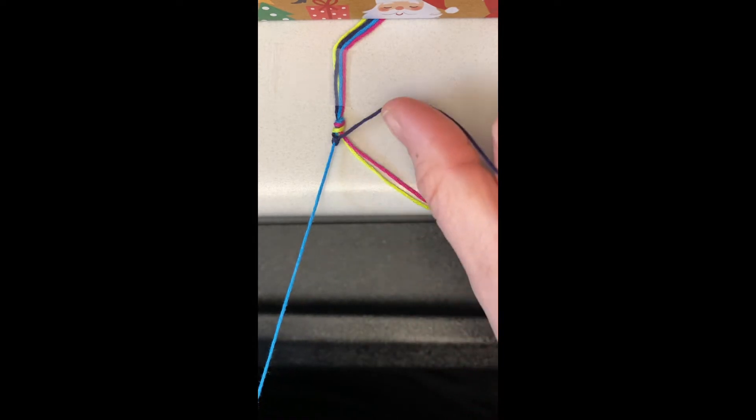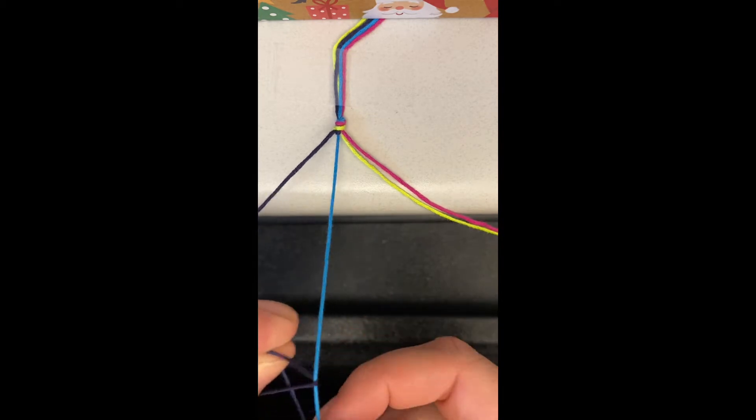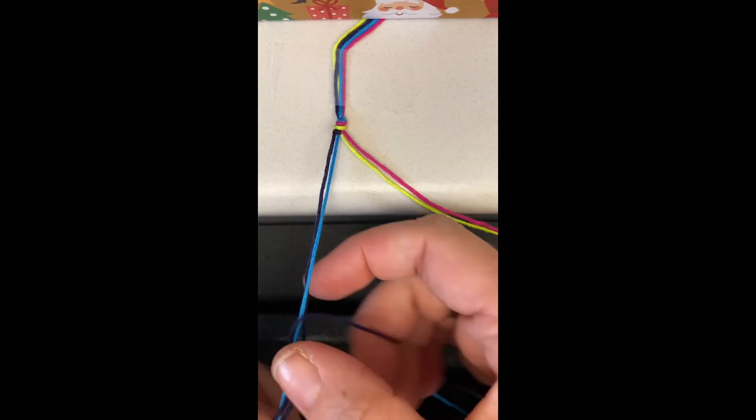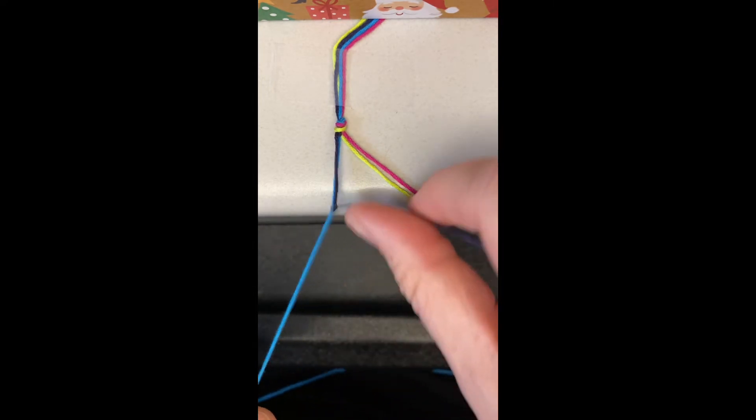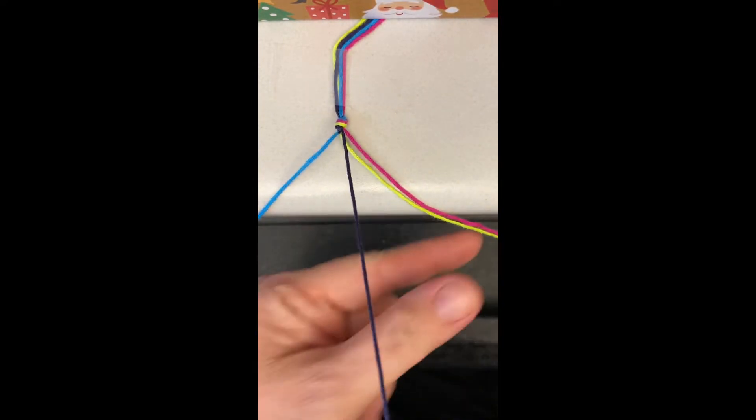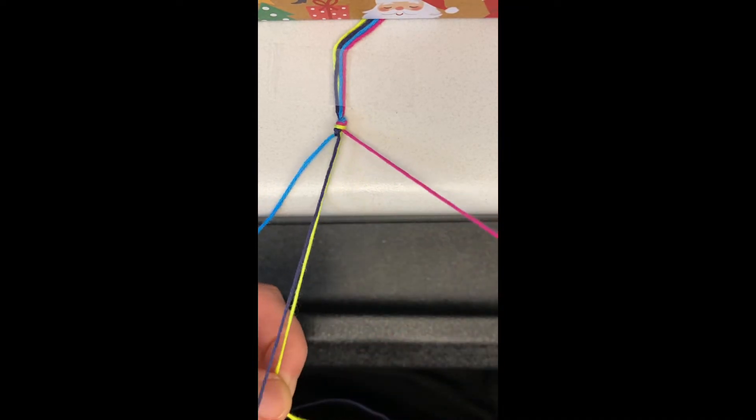For this one, you want to start on the left side with the outermost color. Shown here I'm using a purplish color. And make a forward knot by creating a four shape over the second color. Loop it under and back through the opening. Pull up and to the right to tighten.